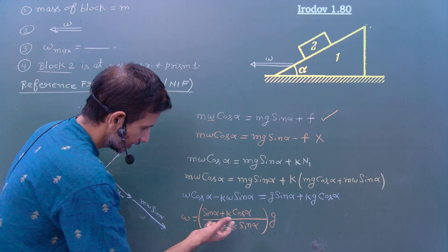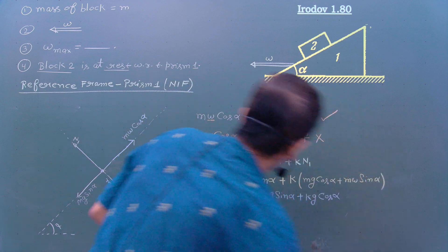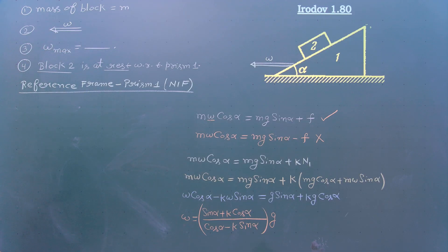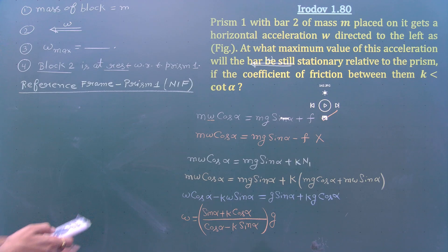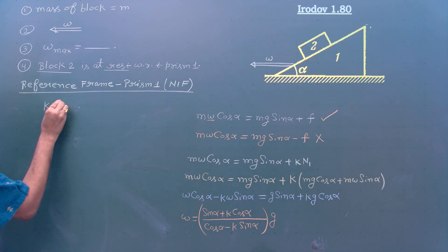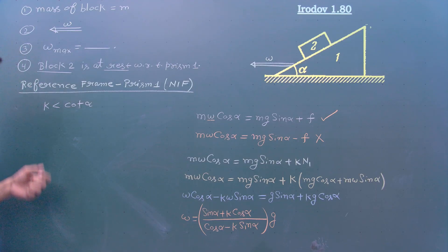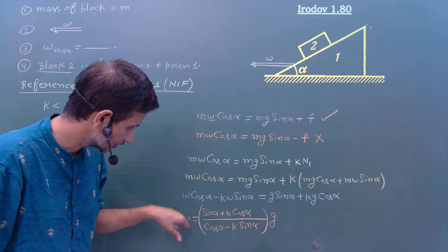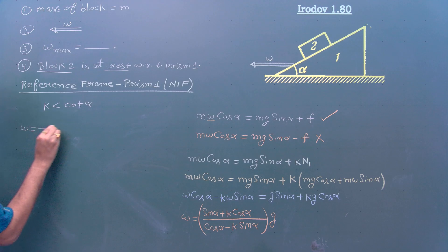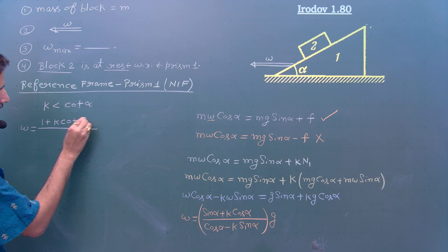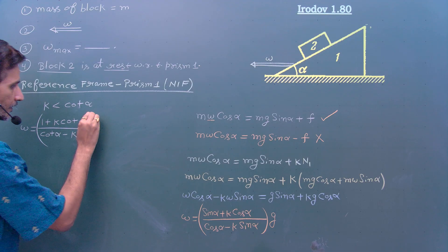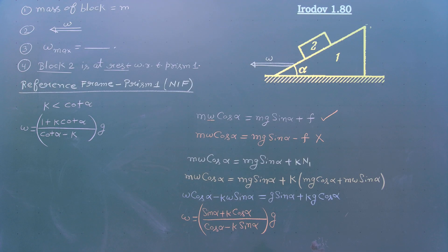This is the answer for w maximum — the maximum acceleration of prism 1 such that block 2 is at rest with respect to prism 1. We can rearrange and write it in a simpler form in terms of cot alpha: w equals g times (1 + k cot alpha) divided by (cot alpha minus k).